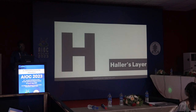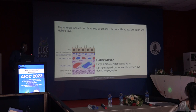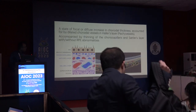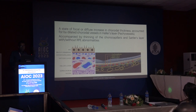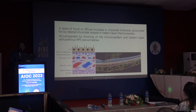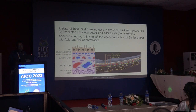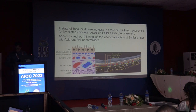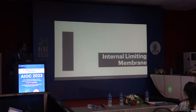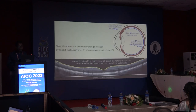H for Haller's layer. The choroid consists of three substructures: choriocapillaris, Sattler's layer, and Haller's layer, which contains large-diameter arteries. An important observation in pathological conditions is focal and diffuse increase in choroidal thickness accounted for by dilated choroidal vessels — these are called pachy vessels. The clinical spectrum identified is called pachychoroid, defined as a state of focal or diffuse increase in choroidal thickness due to dilated choroidal vessels.